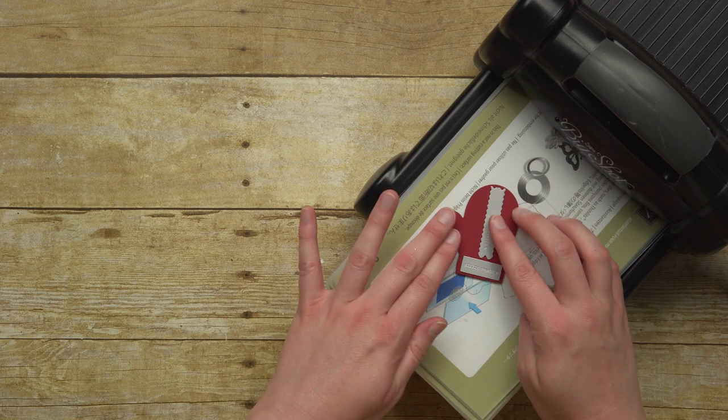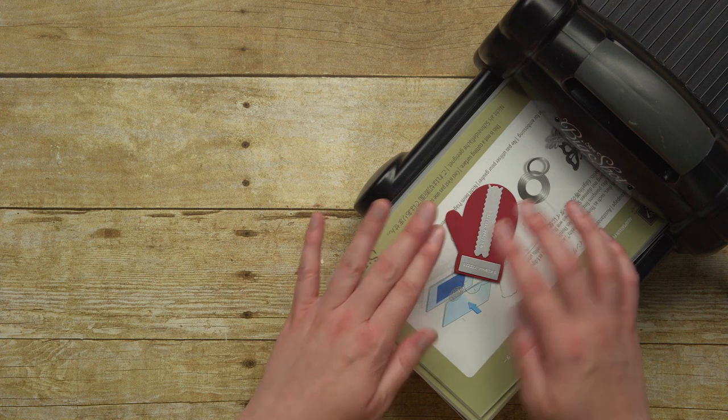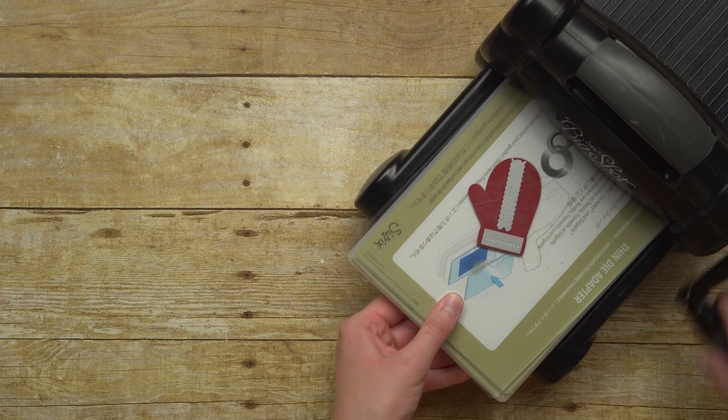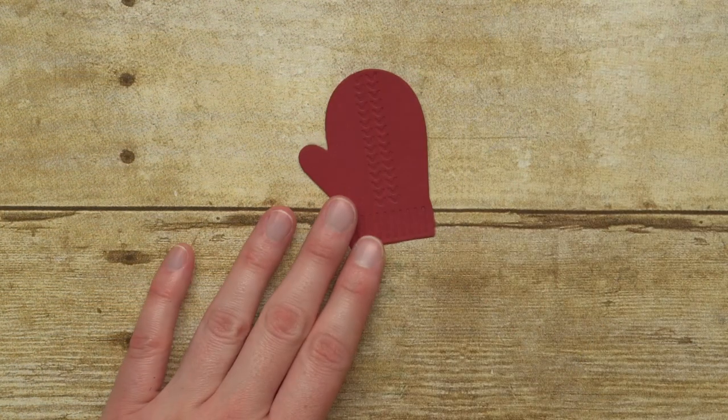If you're not getting the spacing you want, you may just want to send just one dry embossing image through. Then send through your Big Shot. Isn't that so cute?